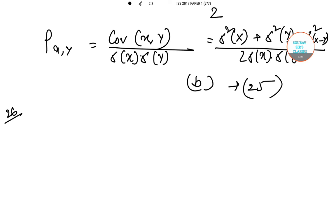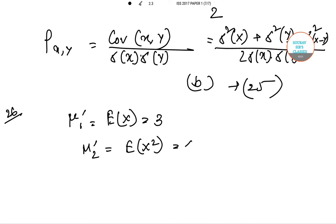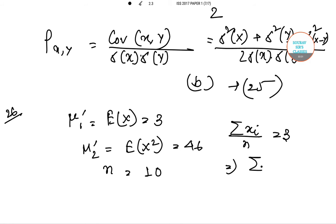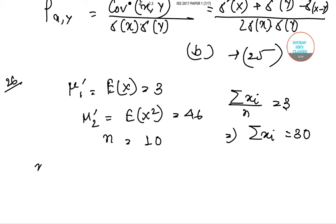In question number 26, we are given that for a distribution of 10 observations, calculations showed that the first two moments about the origin are 3 and 46 respectively. It was however discovered that the observation 12 was wrongly written as 22. We need to find the correct value of mean and variance. So mu 1 dashed equals expectation of x equals 3, and n equals 10, so summation of xi by n equals 3, which gives summation of xi equals 30.